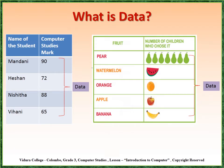Here you can see more examples for data. There are two tables: a mark table and a fruit table. In the fruit table, you can see the number of children who chose a particular fruit: one child for pear, one for watermelon, one for orange, one for apple, one for banana. I think you can understand what is data.